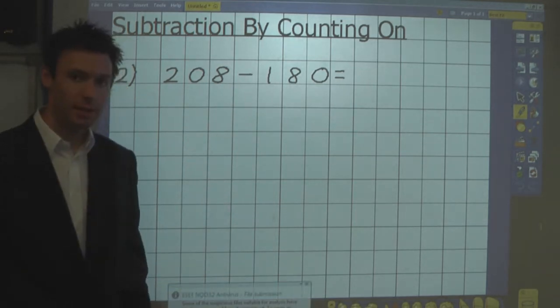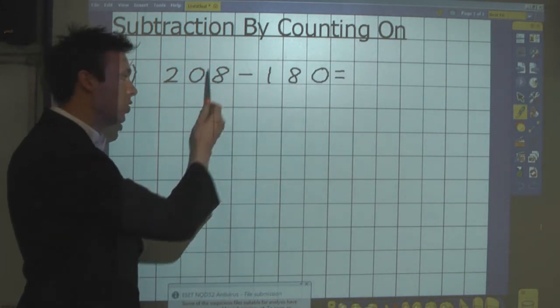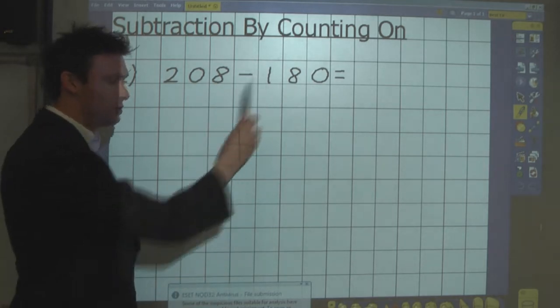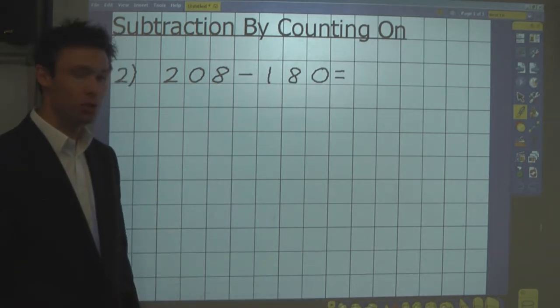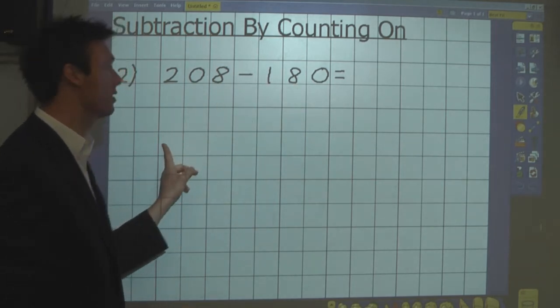208 take away 180. In this method I'm going to count on from 180 to 208, and that will give me the answer to the difference between these two numbers. To do that I start by writing the number I'm taking away on the left hand side.